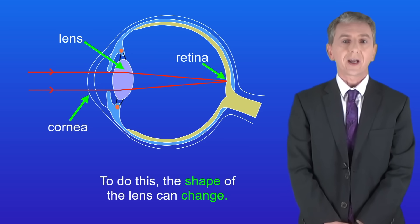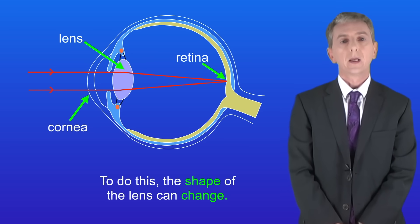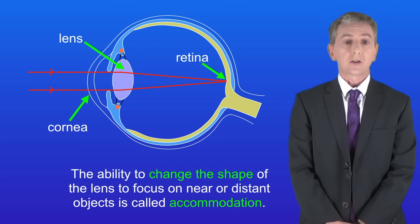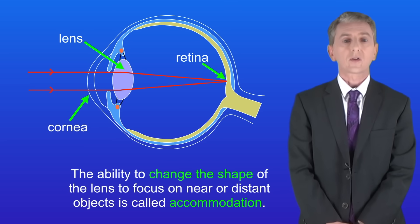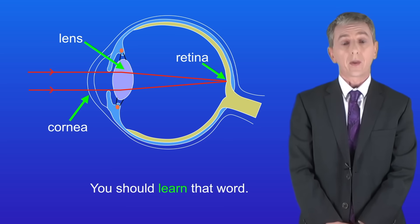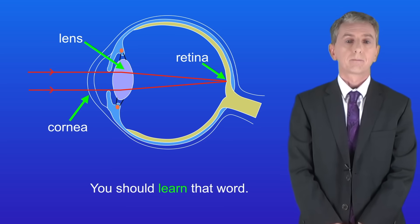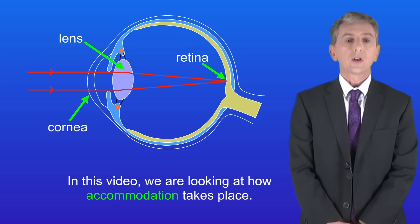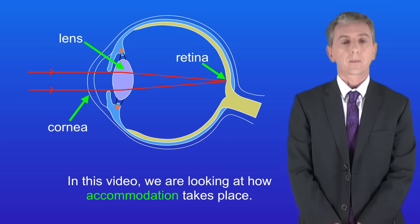To do this, the shape of the lens can change. The ability to change the shape of the lens to focus on near or distant objects is called accommodation — and you should learn that word. In this video we're looking at how accommodation takes place.